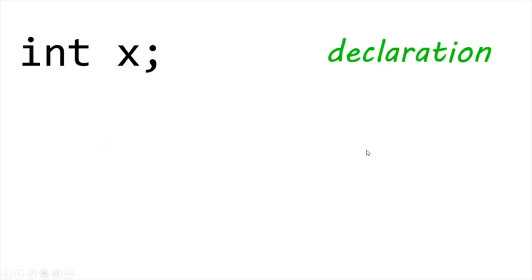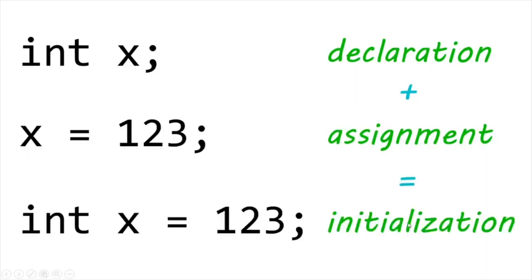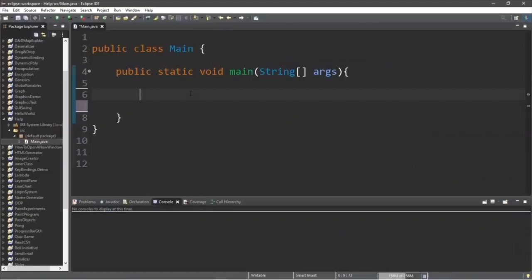So how do we create a variable? The first process is declaration — we list the data type of the value the variable is going to store, followed by a variable name and a semicolon. The next step is assignment — we take our variable and assign it a value. Or we can combine steps one and two together — this process is called initialization: the data type, followed by the variable name, set equal to some value, followed by a semicolon.